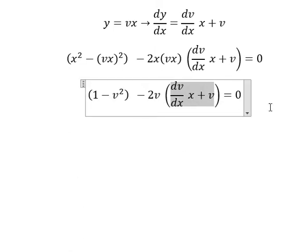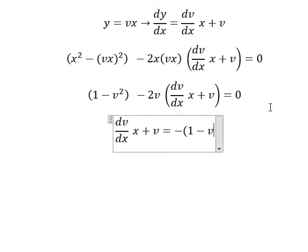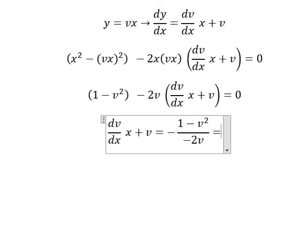And then we divide both sides by negative 2v. We simplify the negative signs here.